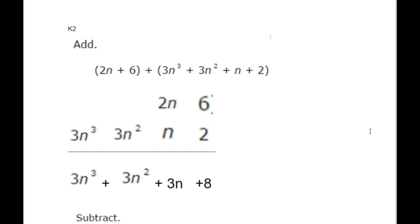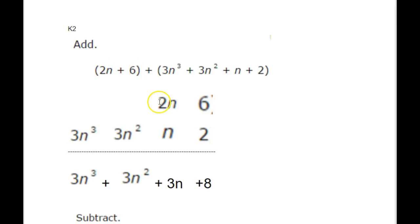Now here's an explanation of how to add and subtract polynomials. Sometimes when they ask you to add two polynomials, they'll put them in an expression with an addition or subtraction sign in between and parentheses around each one. It's easier if you arrange them vertically — put like 2n plus 6 on top, then 3n cubed plus 3n squared plus n plus 2 on the bottom, lining up the number terms, the n terms, and the n squared terms on top of each other.